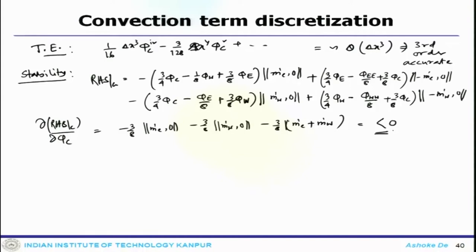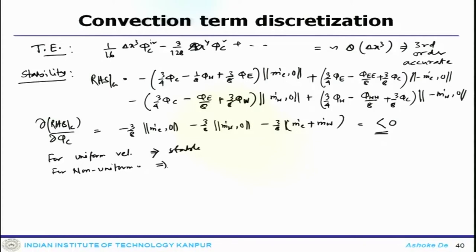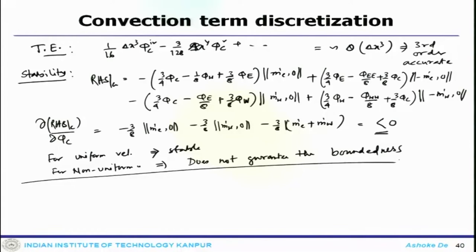However, this does not guarantee solution boundedness, especially in the case of non-uniform velocity. For uniform velocity it is always stable; for non-uniform velocity it does not guarantee boundedness. That is the point one has to note.